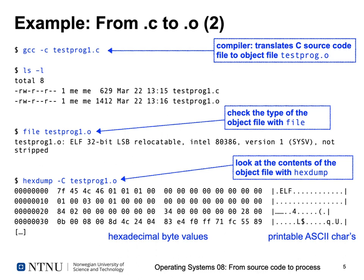By convention, if you compile a file named x.c you get an object file x.o as a result. Listing your directory, you now see testproc1.c and the generated testproc1.o. You can check using the Unix file utility what kind of file testproc1.o is — just enter 'file' and the name of the object file — and you get some output: testproc1.o is an ELF 32-bit LSB relocatable Intel 80386 version 1 System V not stripped file.